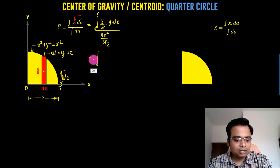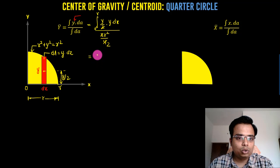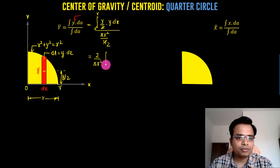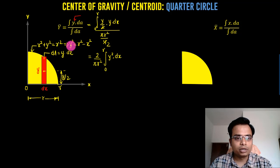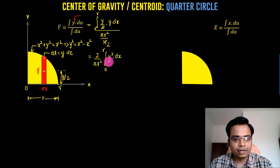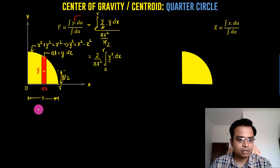The integral we have in front of us is: (2 / πr²) times the integral from 0 to r of y²·dx. Now y² can clearly be written as r² − x², so just substitute y² = r² − x² and everything shall fall in place.